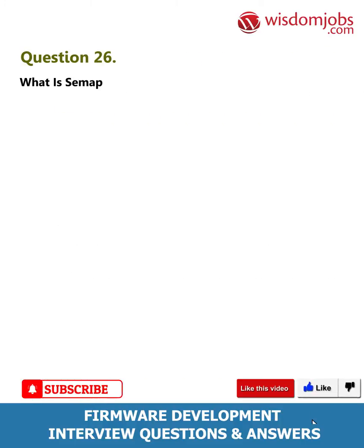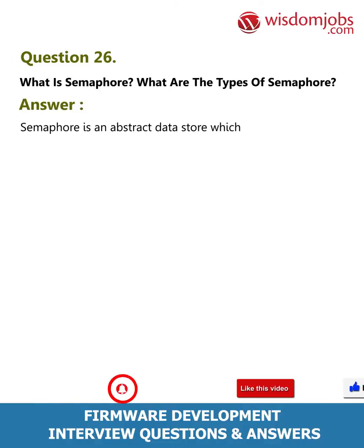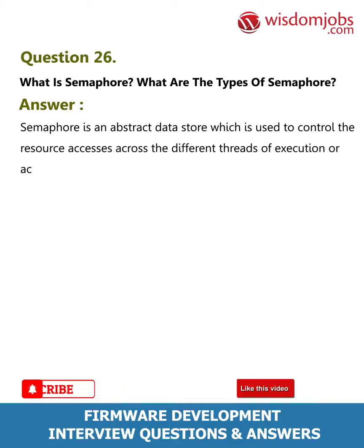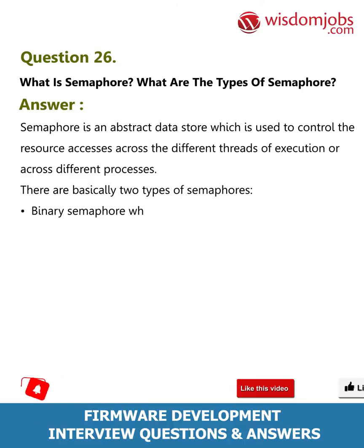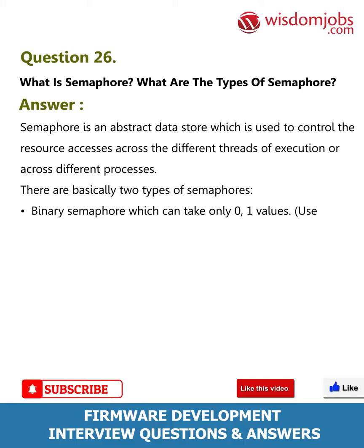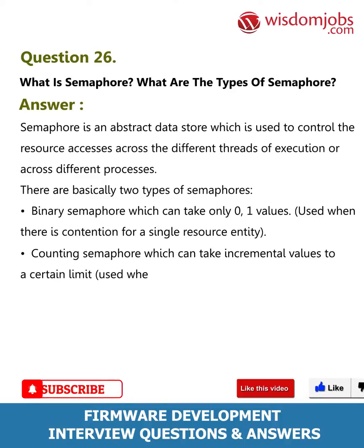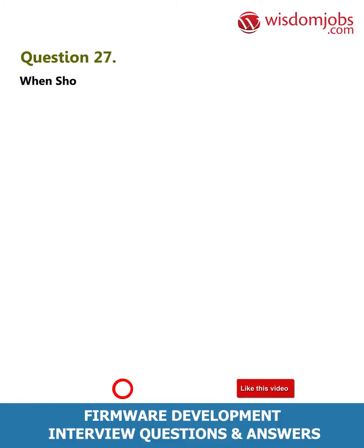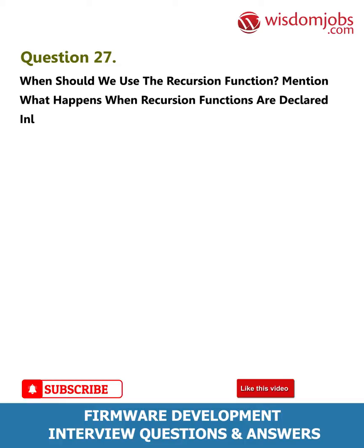Question 26: What is a semaphore? What are the types of semaphore? Answer: A semaphore is an abstract data store used to control resource access across different threads of execution or across different processes. There are basically two types: binary semaphore, which can take only zero or one values and is used when there is contention for a single resource entity; and counting semaphore, which can take incremental values up to a certain limit and is used when the number of resources is limited.